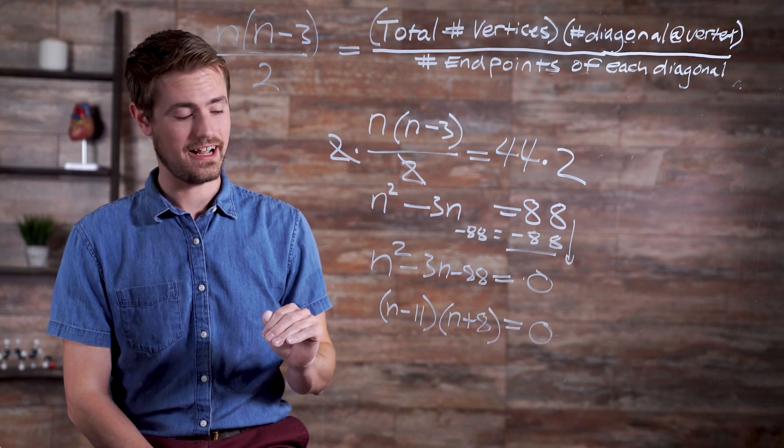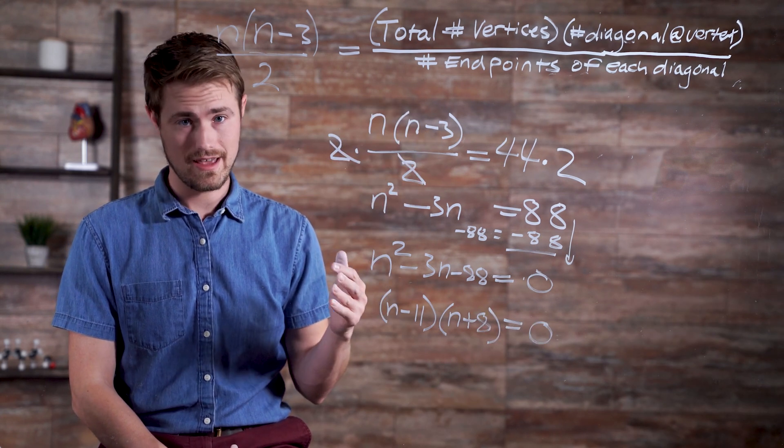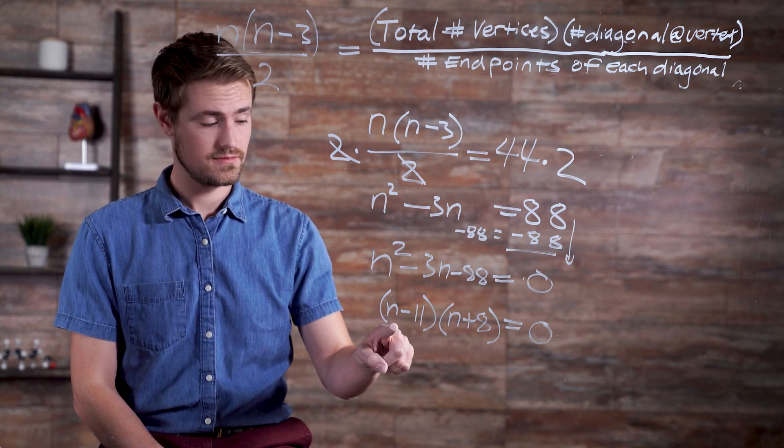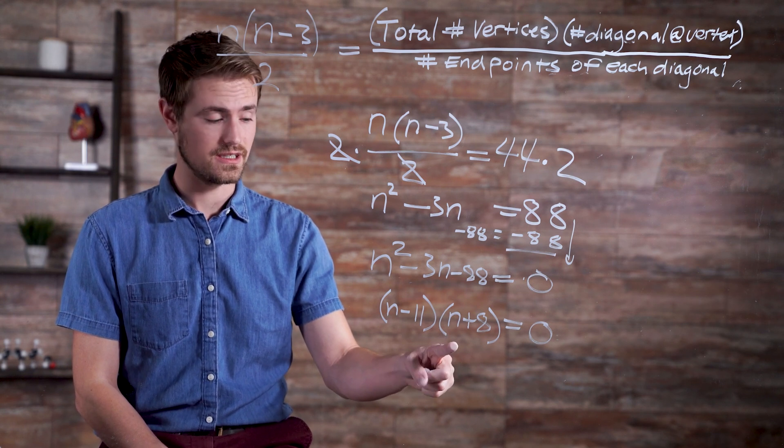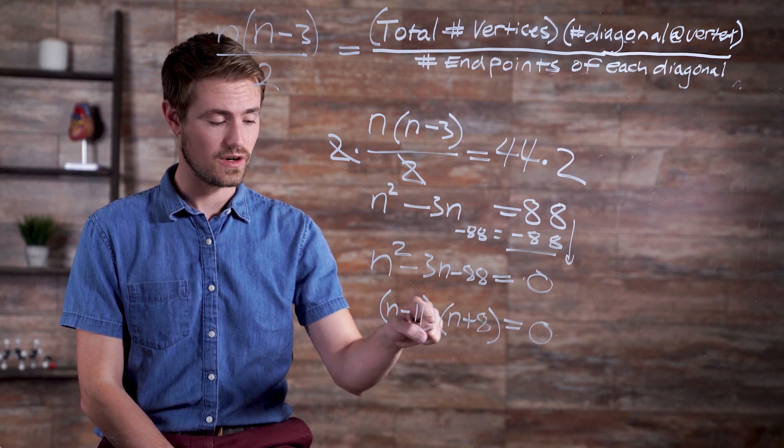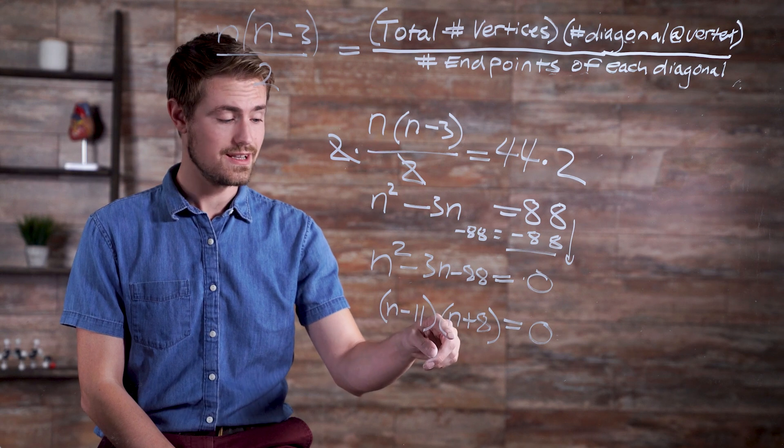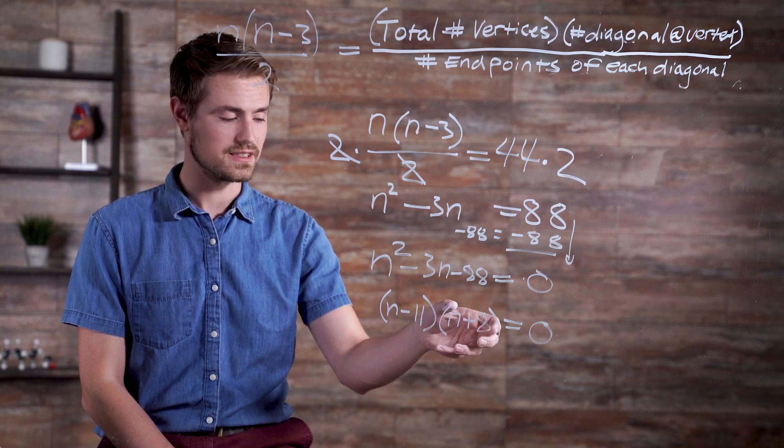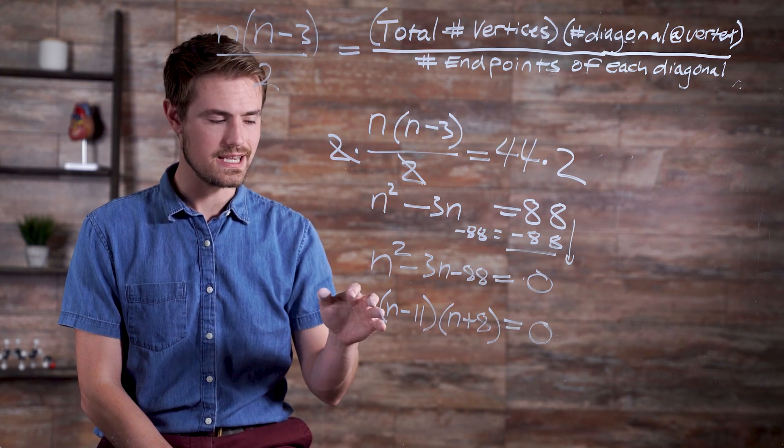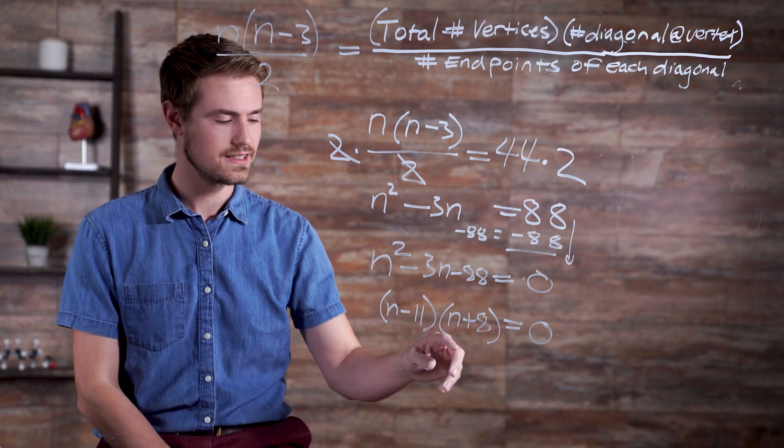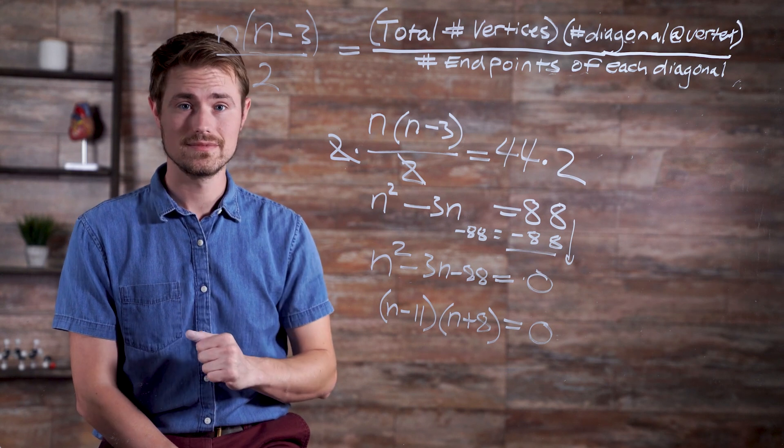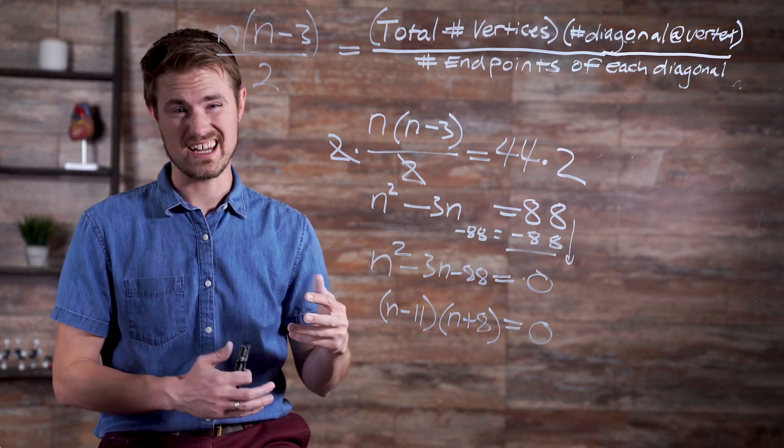Alright, so here we are at our answer. n, the number of edges the polygon has, is either equal to 11 or negative 8. Because what we want to do is, we want to make sure that we end with the result of 0. Which means that n, somewhere, has to be 11 or negative 8 in order to get us multiplying 0 by another answer, resulting in 0. Since n can't be negative, because we can't have negative edges, it can't be negative 8. So we know that our answer is 11. The number of edges is 11, making it an 11-gon.